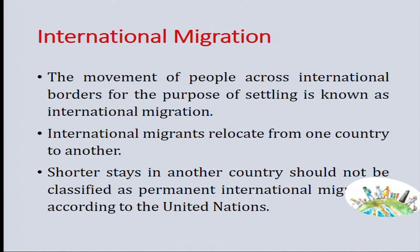The movement of people across international borders for the purpose of settling is known as international migration. When people move from one country to another across national boundaries, it is called international migration. International migrants relocate from one country to another looking for better opportunities or for other varied reasons. Shorter stays in another country should not be classified as permanent migration, insists the United Nations.